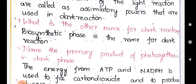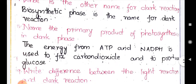The next question: 'Name the primary product of photosynthesis in the dark phase.' The energy from ATP and NADPH is used to fix carbon dioxide and produce glucose. The end products of the light reaction — ATP and NADPH — provide energy that helps fix carbon dioxide, which is then used in the production of glucose. So the primary product is glucose, because carbon is the main important part of the glucose molecule.